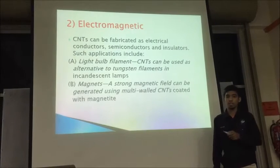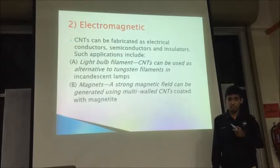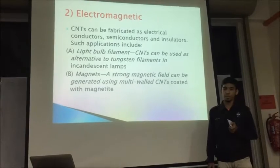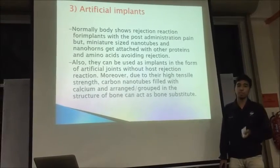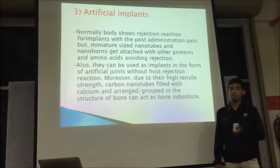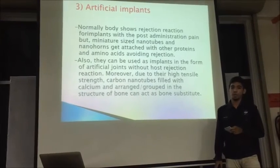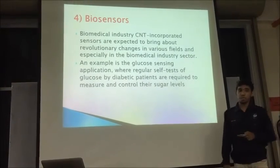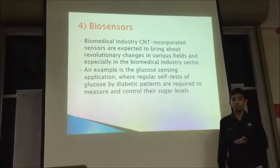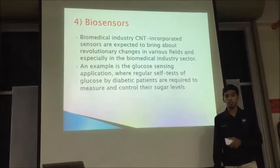Second, in the electromagnetic field, carbon nanotubes can be applied in light bulb filaments. Third, artificial implants — they can be used as implants in the form of artificial joints without force rejection and reaction. Fourth, biosensors. For example, they are a good sensor for lubrication where glucose tests for diabetic patients are required to measure and control their sugar levels.